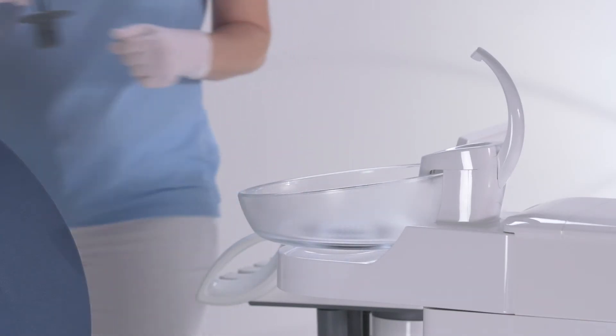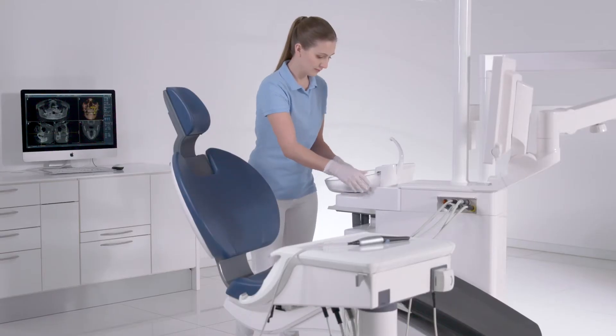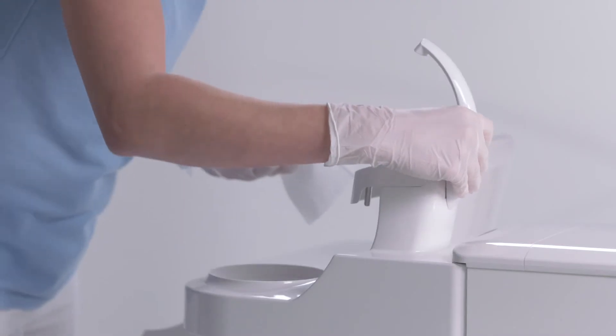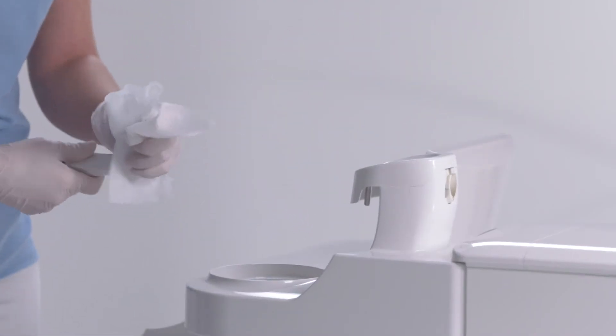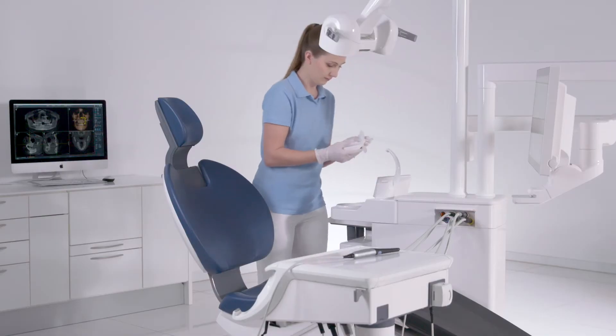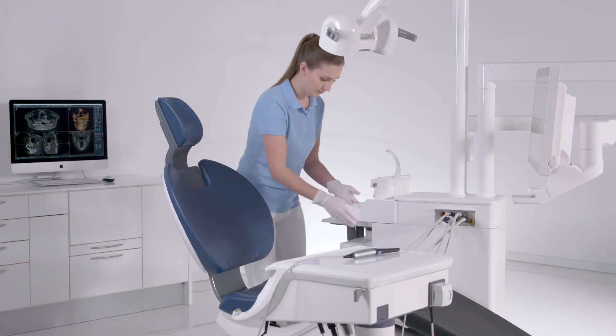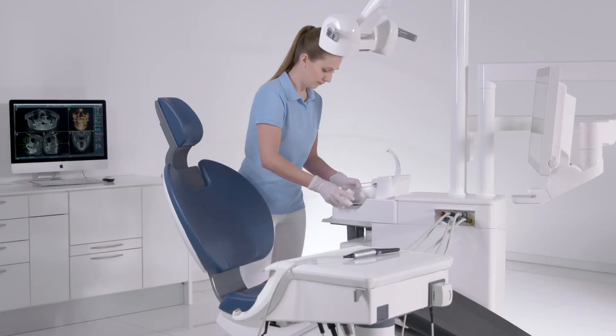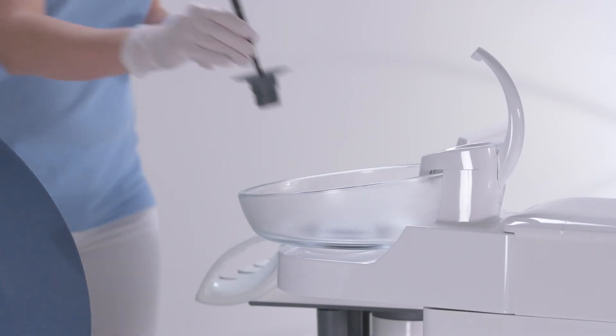Remove the gold trap and then take off the cuspidor for thorough cleaning. Now, clean the tumbler filler, the cup holder, and the swivel unit. Then, reattach the cleaned cuspidor and the gold trap.